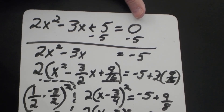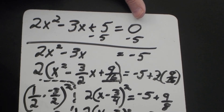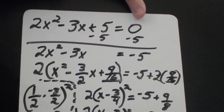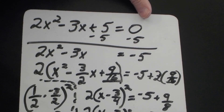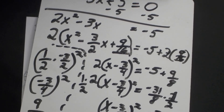I'll leave the right side as negative thirty-one eighths for now. To isolate the squared term, I multiply both sides by one-half — dividing by 2. That gives (x minus three-fourths) squared equals negative thirty-one over sixteen.